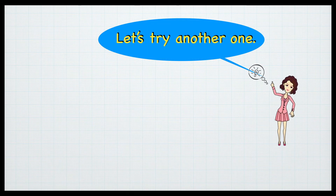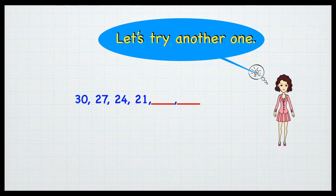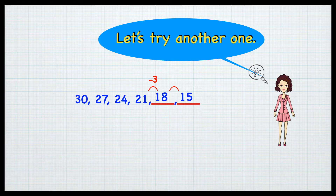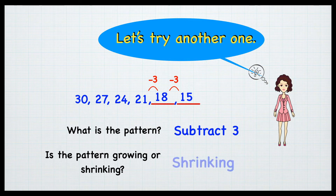Let's try another one. 30, 27, 24, 21, 18, 15. Minus 3, minus 3, minus 3. What is the pattern? Subtract 3. Is the pattern growing or shrinking? Shrinking.